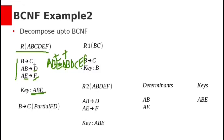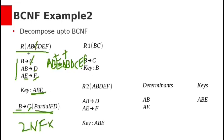Here, B derives C is a partial functional dependency because the key is ABE, B is part of the key, and C is a non-prime attribute being derived by part of the primary key. So this relation is not in 2NF and we need to decompose it. Remove C from the original relation and create a new relation R1 with attributes B and C, where B derives C. R1 is in 2NF, 3NF, and also in BCNF since its determinant B is its key.